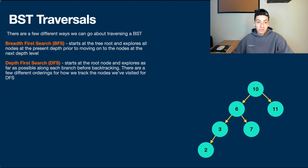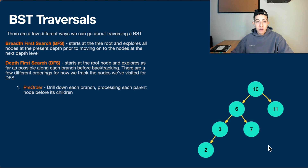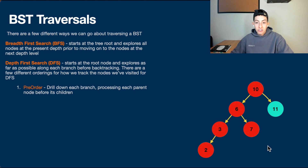Our next traversal method is depth-first search, which starts at the root node and explores as far as possible along each branch before backtracking. There are a few different orderings for DFS. The first is called pre-order, where we drill down each branch processing each parent node before its children. Starting at 10, we process 6, then its children: 3, then 2. We backtrack from 2 to 3 to 6 and continue to its right child, 7. Since 7 has no children, we backtrack to 10, and finally process 11.